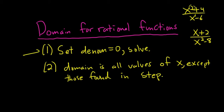Step 1: set the bottom equal to 0, solve for x. Step 2: the answer is all of the x's except the ones you found. Because basically, you can't divide by 0.